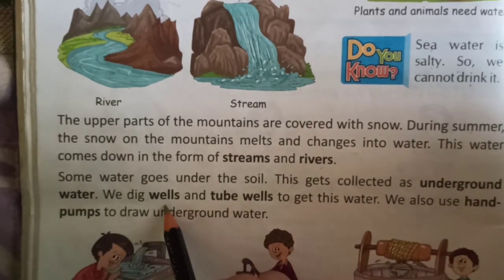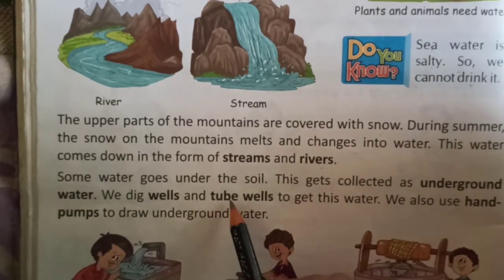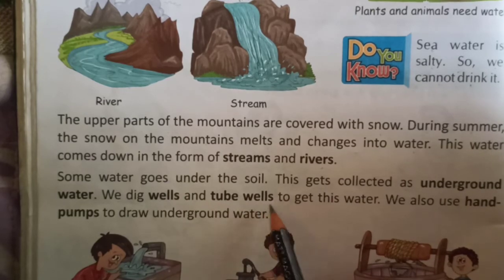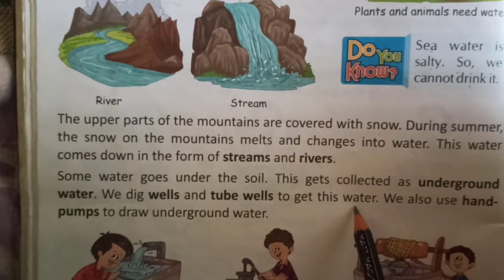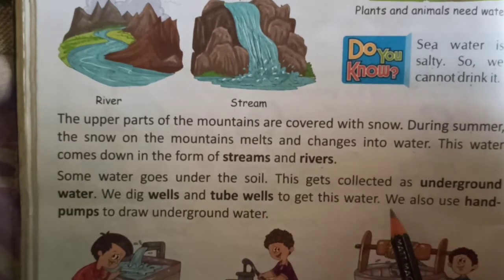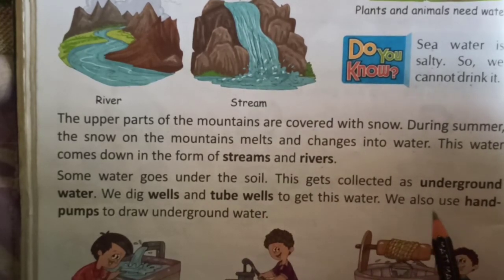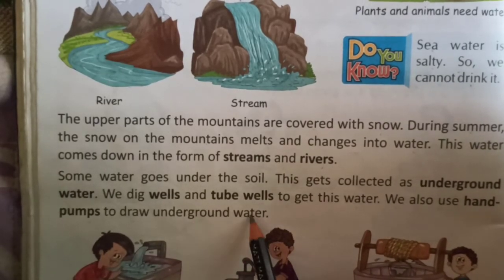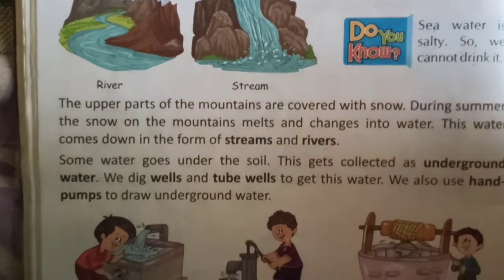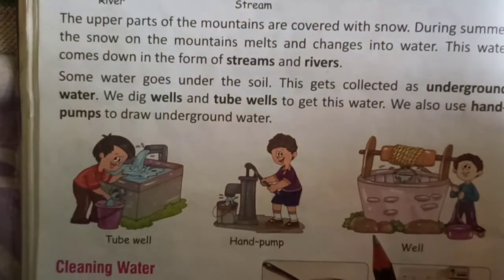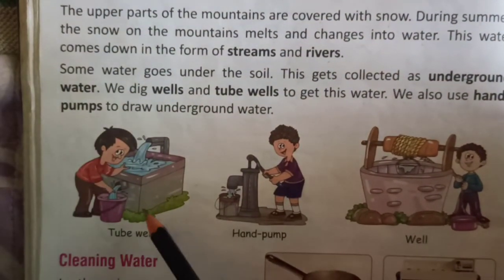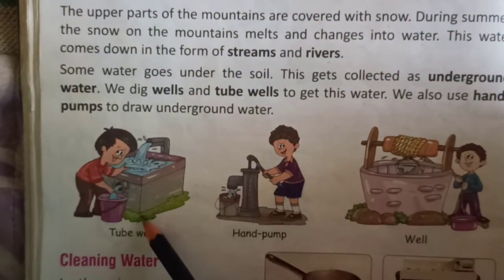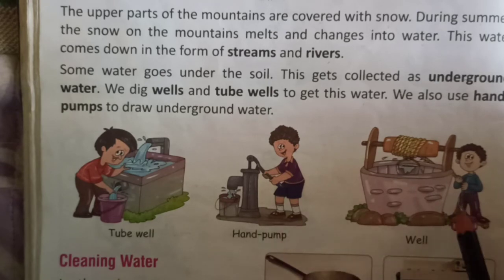Some water goes under the soil and gets collected as underground water. We dig wells and tube wells to get this water. We also use hand pumps to draw underground water. Here you can see the pictures of a tube well, hand pump, and a well.